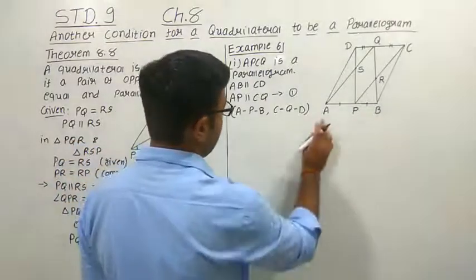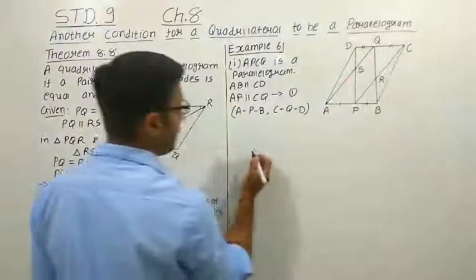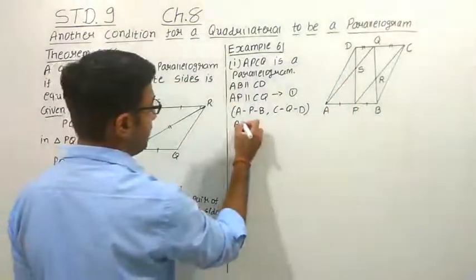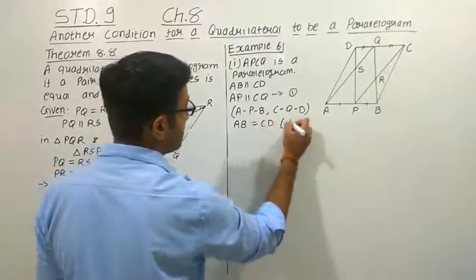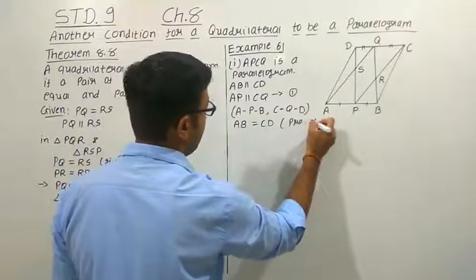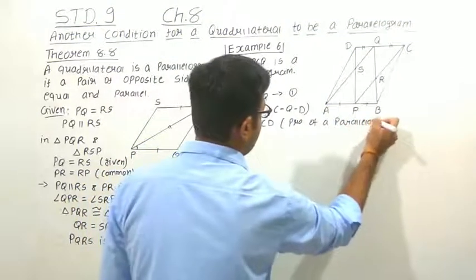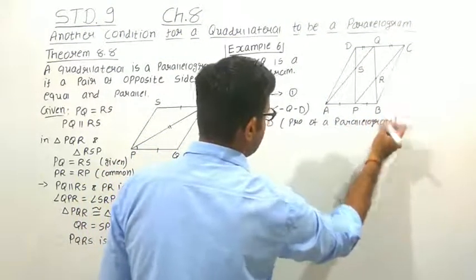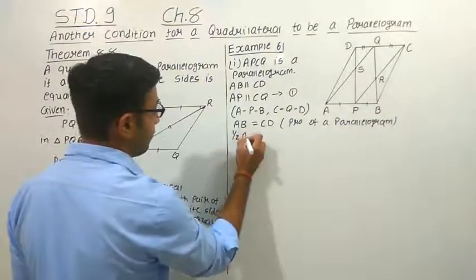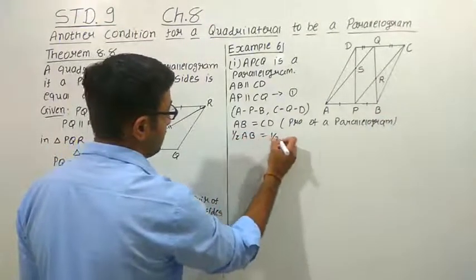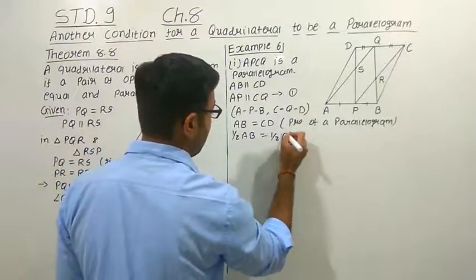According to the condition of parallelogram ABCD, opposite sides are equal. So we can write down that AB is equal to CD. This is the property of a parallelogram — opposite sides are equal. Now, take half of both sides; if we divide both sides by 2, what will happen?